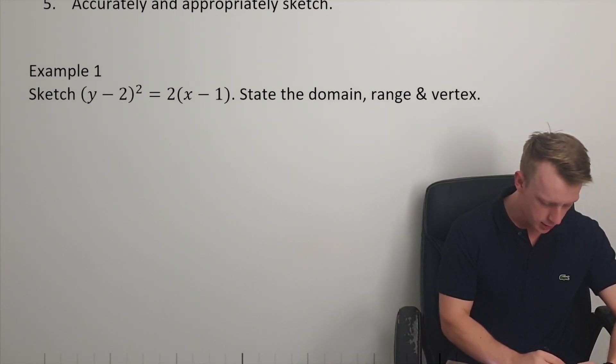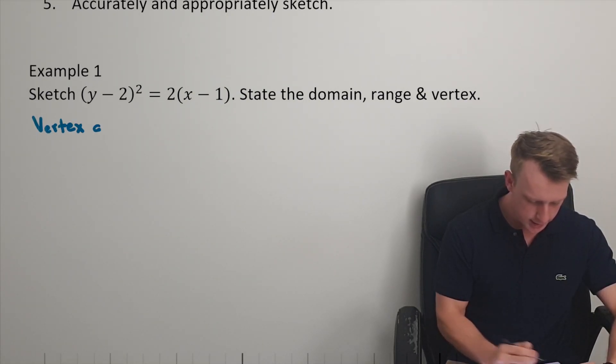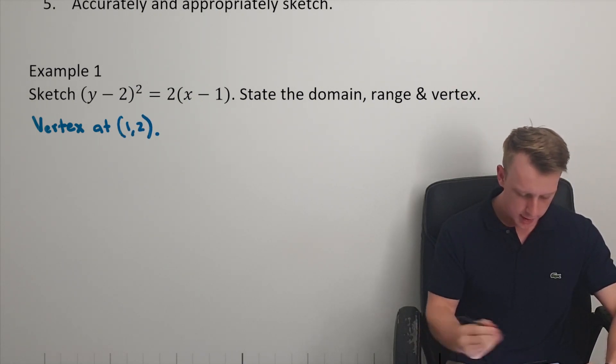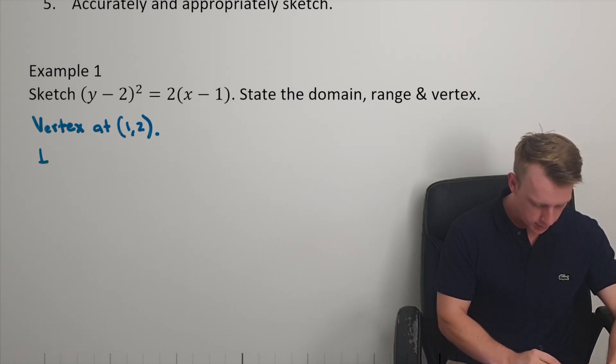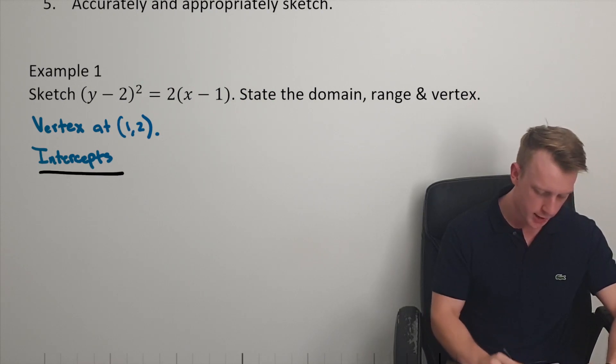So we've got an example like this here. I know, straightaway vertex, I can read it off. It occurs at the point 1, 2. And then I need to find some intercepts. We should know how to find an intercept by now.